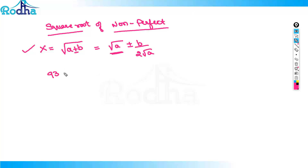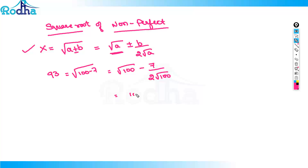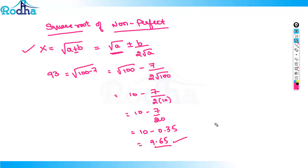Similarly, you can find the square root of 93. It can be written as 100 minus 7, giving: √100 − 7/(2×10) = 10 − 7/20. This is your answer.